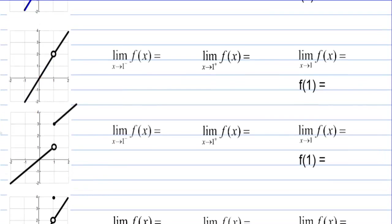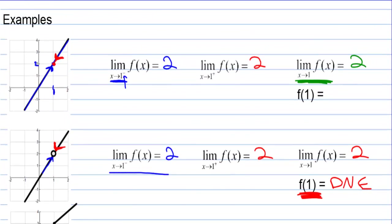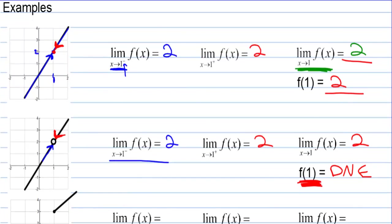The limit as x approaches 1 from the left of f(x) is 2. There's a hole there — the function value doesn't exist — but the graph is still approaching a y value of 2. The right-hand limit is also 2, so the limit is 2, but the function value at 1 does not exist. Going back to the first example, f(1) is also 2, so the limit at 1 and the function value at 1 happen to be the same value.